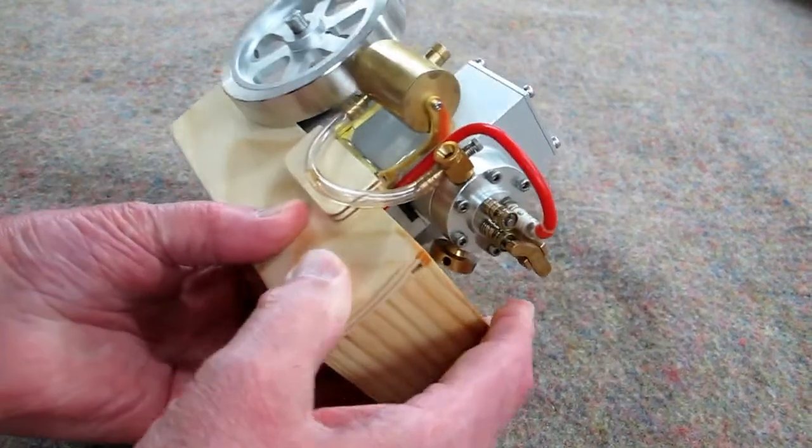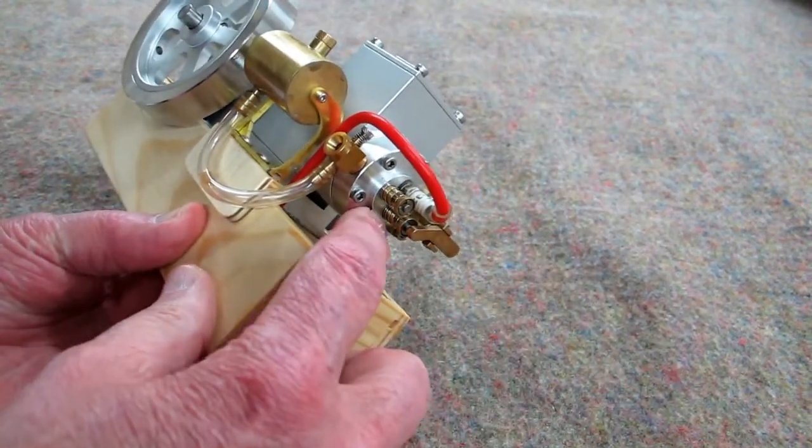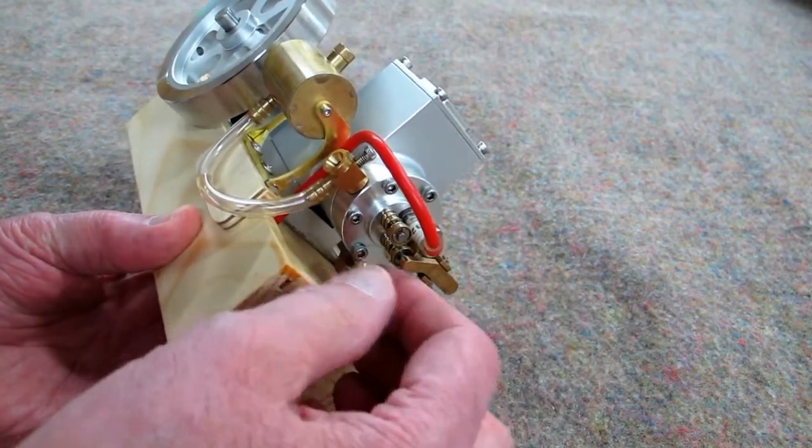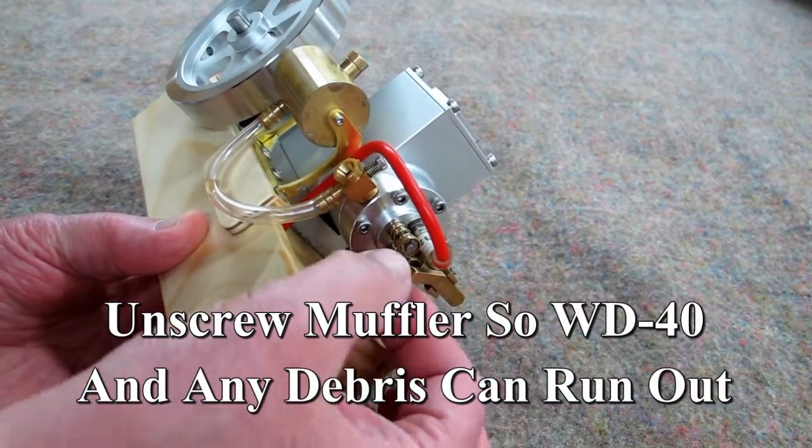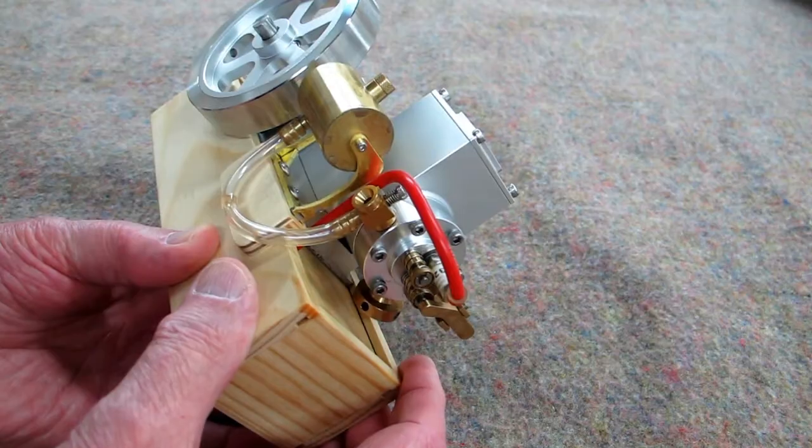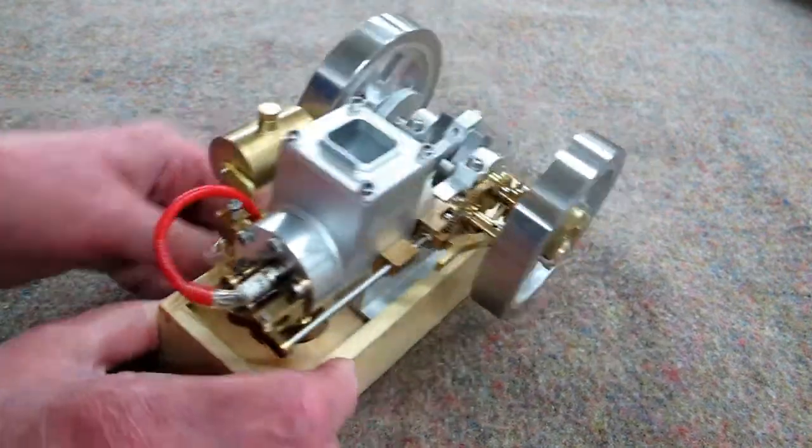One person found that inside here was some carbon and they took the spark plug out and sprayed a little WD-40 in there and wiggled this up and down a little bit and it freed up. They had compression. The thing ran just fine.